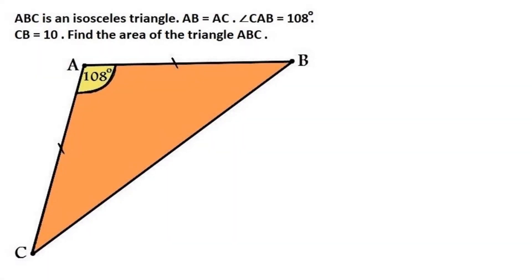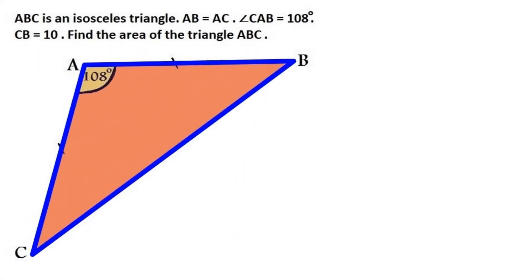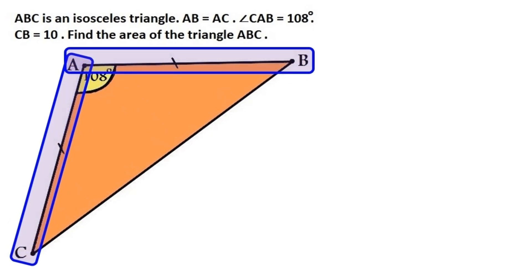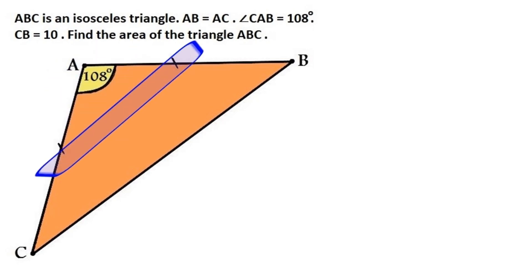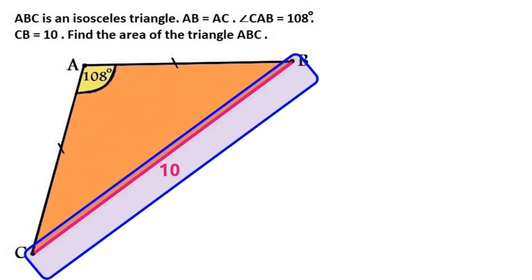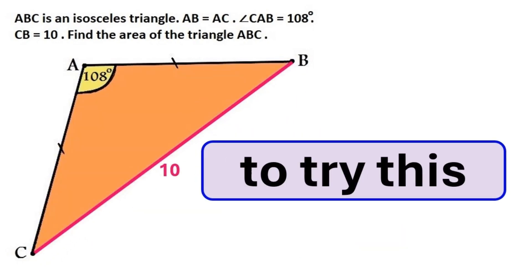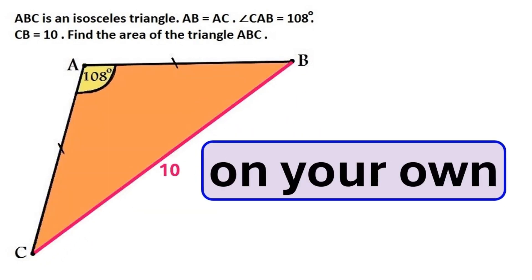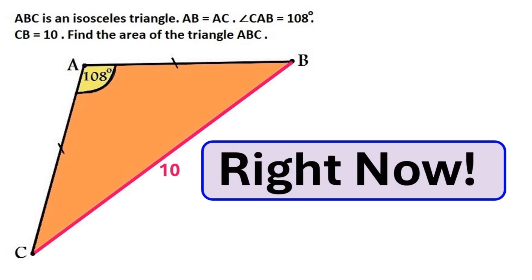In this unique and mind-stimulating geometry puzzle, we've got this isosceles triangle ABC, with two equal sides AB and AC. We know the angle at the top is 108 degrees, and the side BC down here is 10, and we need to find the area of this triangle ABC. If you want to try this on your own, now is the time to pause the video, because I'm starting to solve it right now without using any trick formulas whatsoever.